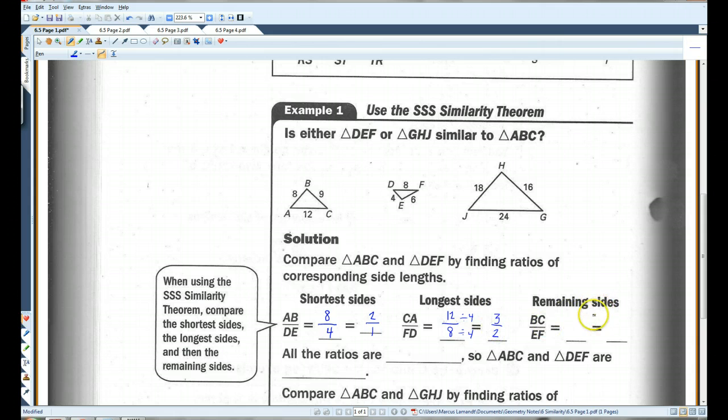BC is 9, EF is 6. Divide both sides by 3, you get 3 over 2. All the ratios are not equal. So, triangle ABC and triangle DEF are not similar. In order for these to be similar, each of these ratios need to be exactly the same.